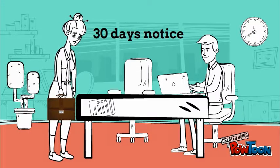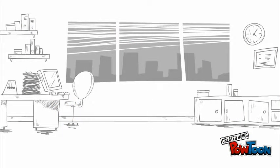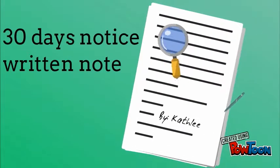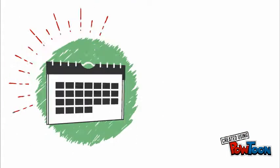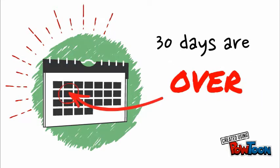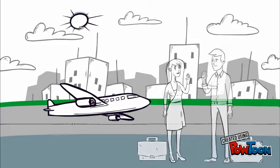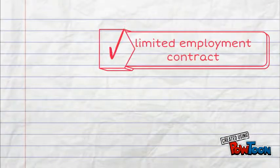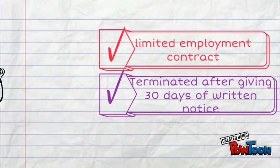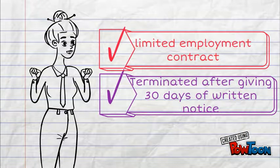She gave her 30-day return notice to her manager to inform him in order to be terminated. As Hamed signed the return notice, the termination period started. 30 days passed and it is time to leave as the minimum period of notice is over. Kathleen is officially terminated and leaving the country. As Kathleen works under a limited employment contract, she is terminated after giving 30 days of notice.